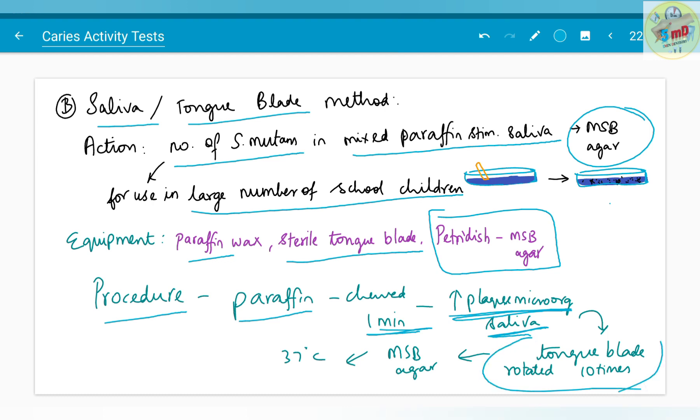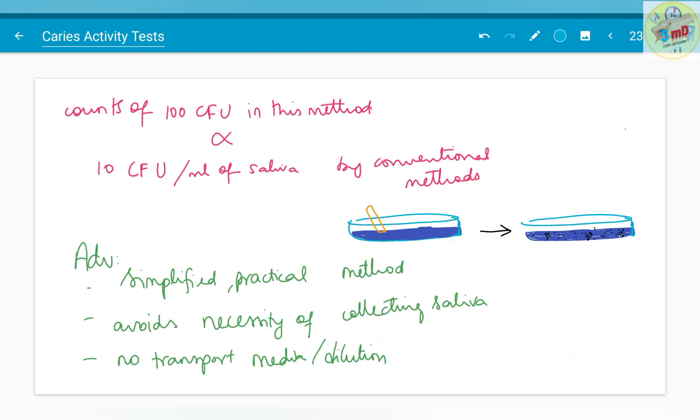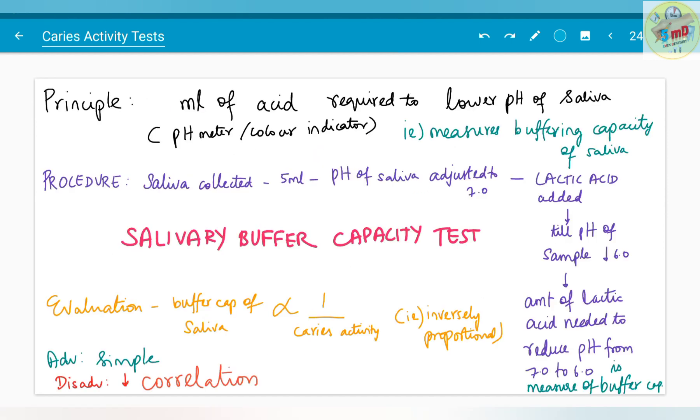It is incubated in MSB agar at 37 degrees Celsius. The important point here is counts of 100 colony forming units in this method is directly proportional to 10 CFU per ml of saliva by conventional methods. The advantage is that it is simplified, practical, and avoids the necessity of collecting saliva. No transport media or dilution techniques are followed.